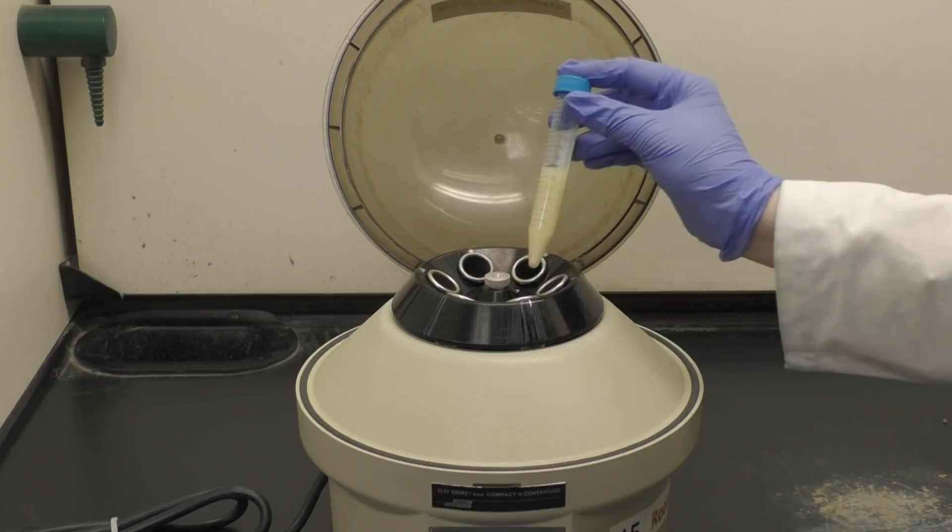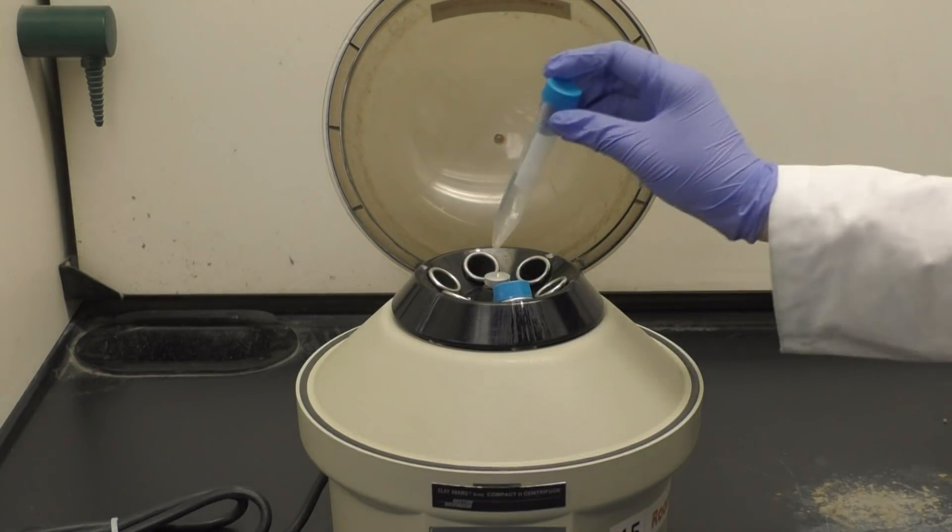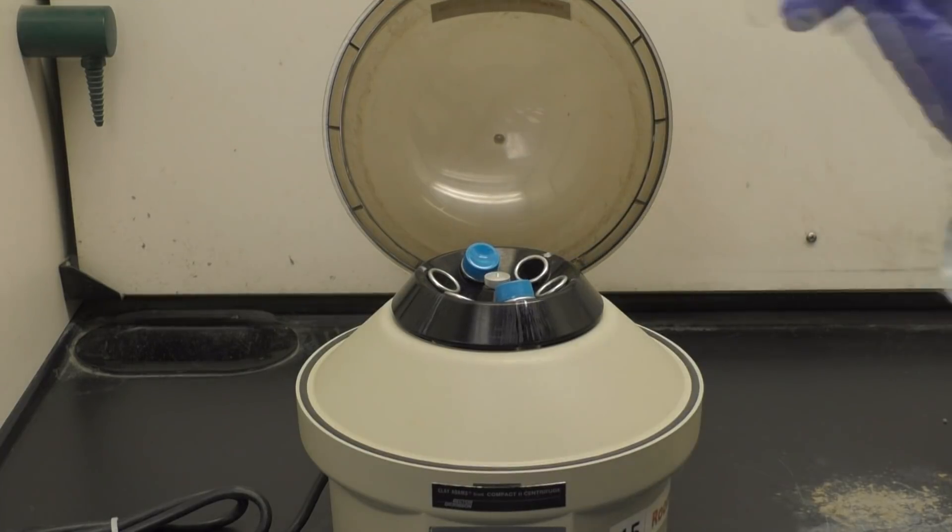To separate the mixture and get distinct layers, you will have to centrifuge your tube for 3 minutes. Don't forget to use a balance tube when using the centrifuge.